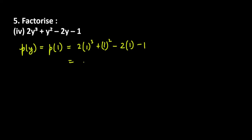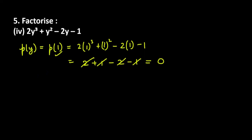Simplifying p(1): first term is 2, second term is 1, third term is minus 2, last term is minus 1. The 1s cancel with minus 1, and the 2 cancels with minus 2, giving answer 0. This means we have a factor. Since the variable here is y, we say y = 1 is a factor, so y minus 1 = 0, meaning y minus 1 is a factor.